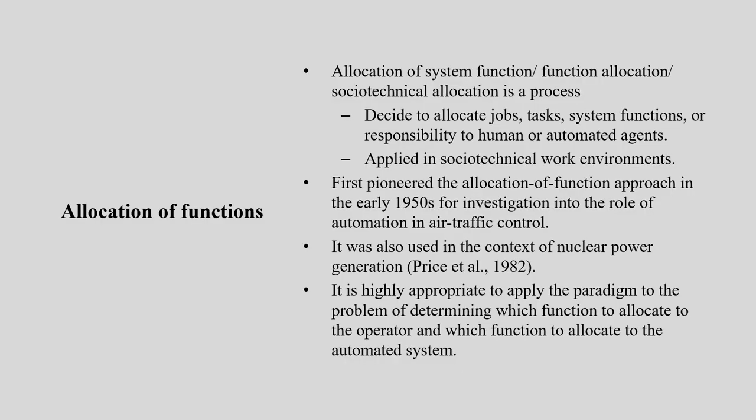In 1982, there is evidence that it was used for nuclear power generation. Every system we are talking about — air traffic control, nuclear power — is very complex in nature. So we have to be very careful when using this methodology. It is highly appropriate to apply this paradigm to the problem of determining which functions to allocate to the operator and which to the machine or automated system.